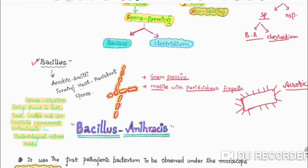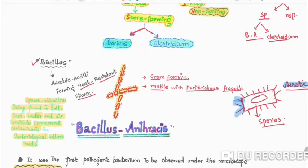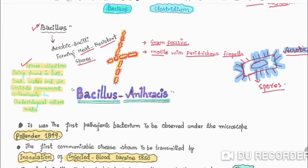Bacillus anthrax forms heat-resistant spores and is aerobic. The spores are ubiquitous — that is, found everywhere. They are found in soil, dust, water, and air. They constitute the commonest contaminants in bacteriological culture media.